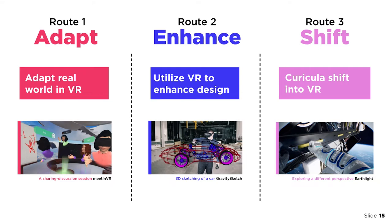Educators in this route wanted to continue their normal way of teaching but needed a space or environment that would be closer to the studio, allowing for better engagement compared to video conferencing setups. An example is a VR meeting room where an instructor shares a video or live demonstration of 2D perspective sketching techniques on a digital canvas, and instructors and students use the VR space for critiques and discussion, sharing their own work and images.